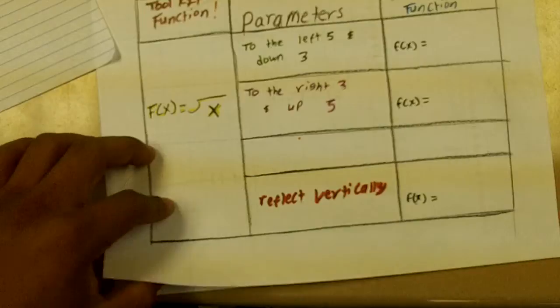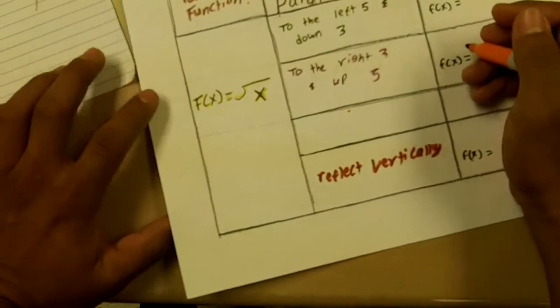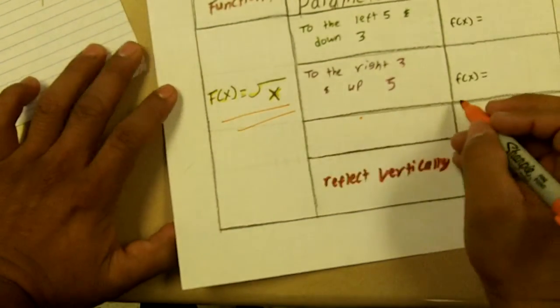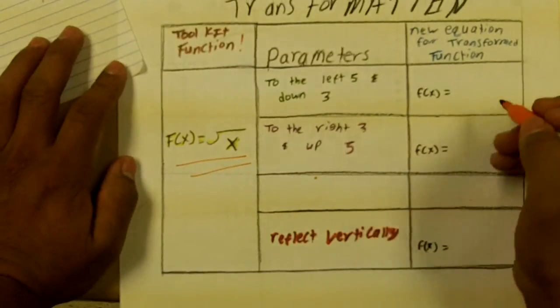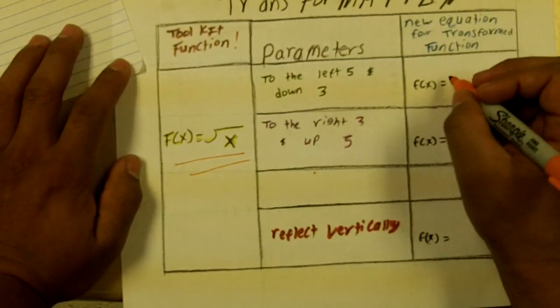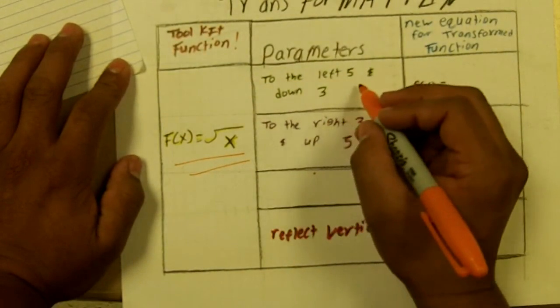And then we do a transformation right here. So this is our toolkit function right here. We got this saying to the left five and down three.